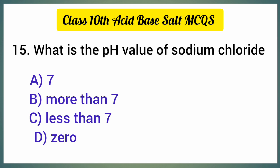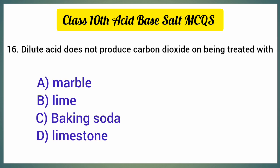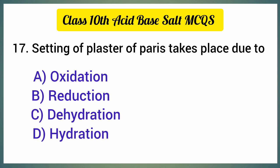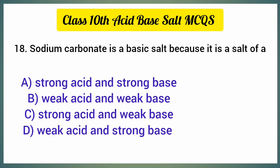What is the pH value of sodium chloride? The correct option is option A, seven. Dilute acid does not produce carbon dioxide on being treated with — the correct option is option B, lime. Setting of plaster of paris takes place due to — the correct option is option D, hydration.